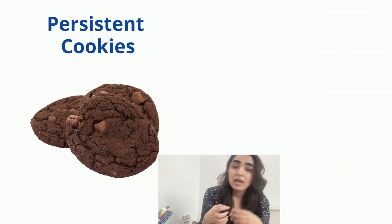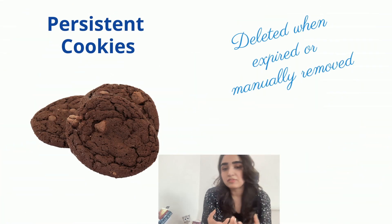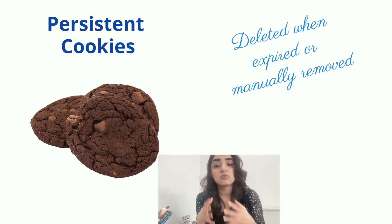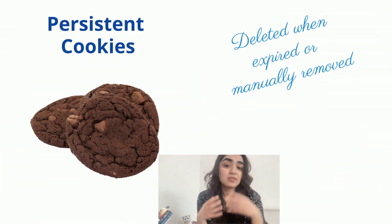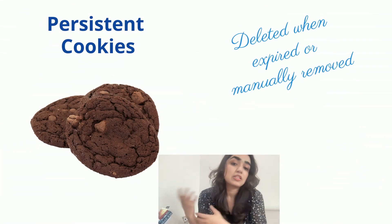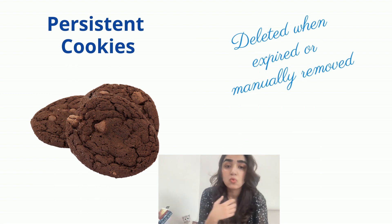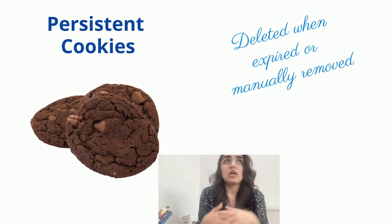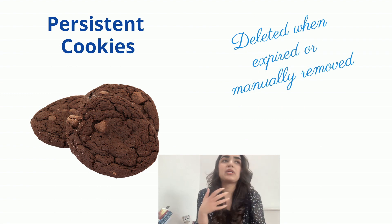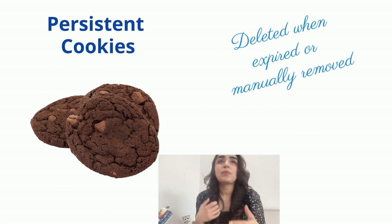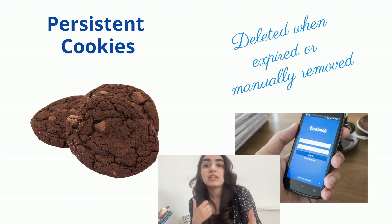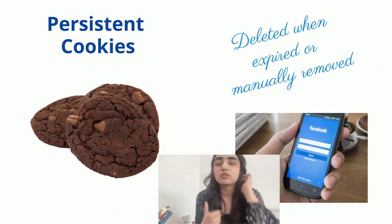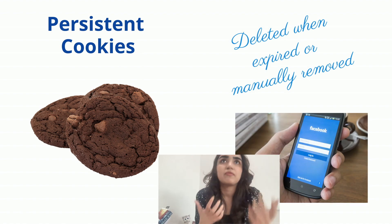Persistent cookies, on the other hand, have a longer lifespan and are stored on your device until they reach their expiration date or until you delete them manually. They could store things like password or login information for certain websites.